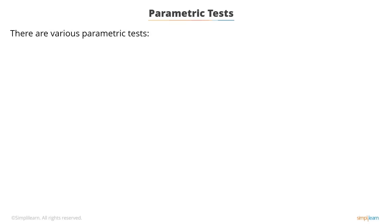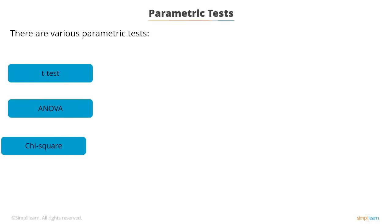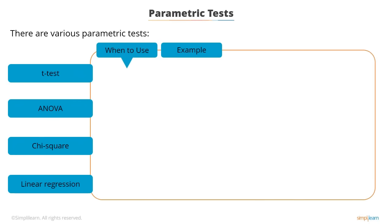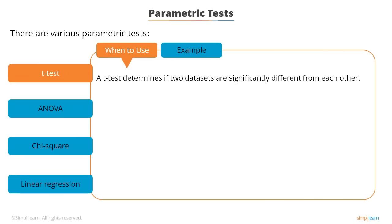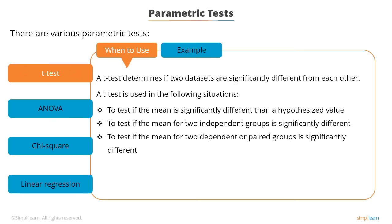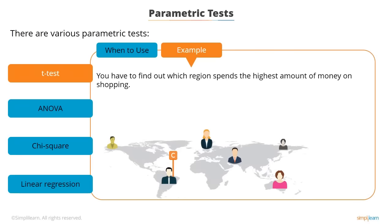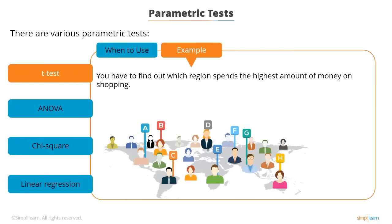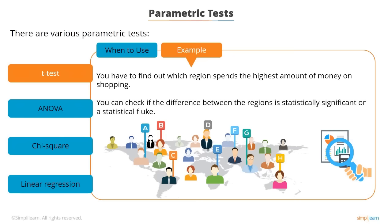The parametric tests are: t-test, ANOVA, chi-squared, and linear regression. A t-test determines if two sets of data are significantly different from each other. It is used to test if the mean is significantly different than a hypothesized value, if the mean for two independent groups is significantly different, or if the mean for two dependent or paired groups is significantly different. For example, to find which region spends the highest amount of money on shopping, you can collect sample observations from each region and use the t-test to check if the differences between regions are significant or a statistical fluke.